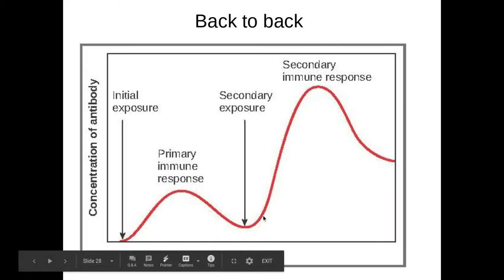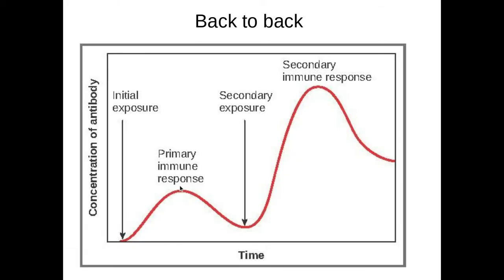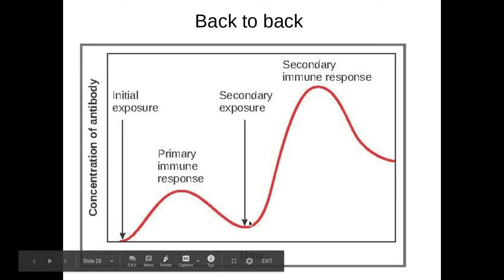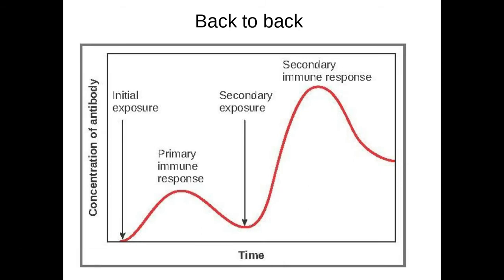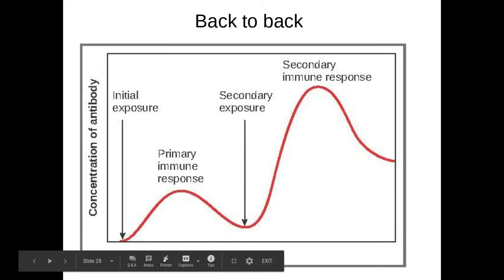It also occurs over a shorter time. The reason for this is because during my primary response, I don't have any memory cells. Whereas after my immune response, I now have T and B memory cells that have been generated through humoral and cell mediated response. Because I have these memory cells, I now have immunological memory to that certain antigen.